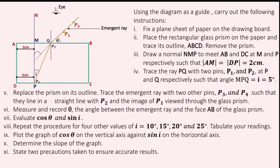Replace the prism on its outline. Trace the emergent ray with two other pins P3 and P4, such that they are in a straight line with P2 and the image of P1 viewed through the glass prism. Measure and record theta, the angle between the emergent ray and the face AB of the glass prism. Evaluate cos theta and sin i. Repeat the procedure for four other values of i: 10 degrees, 15 degrees, 20 degrees, and 25 degrees.